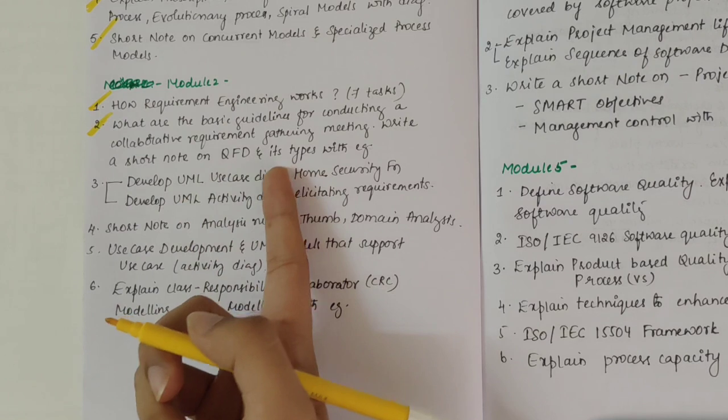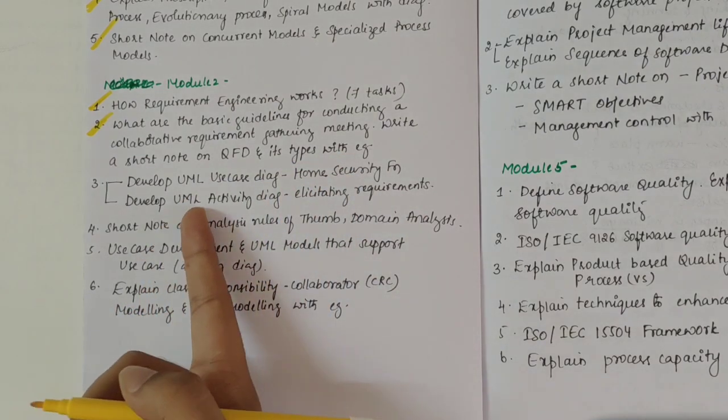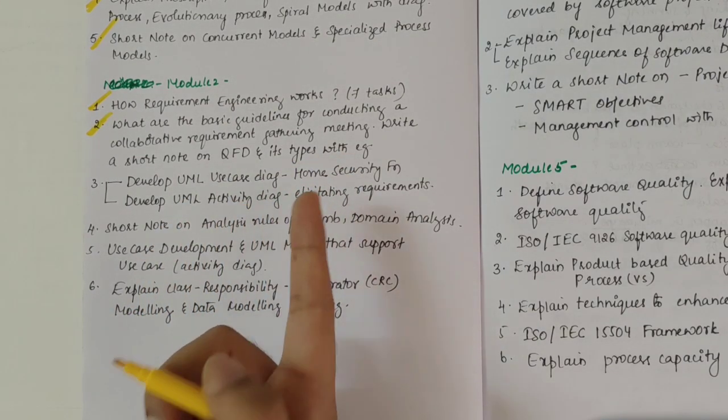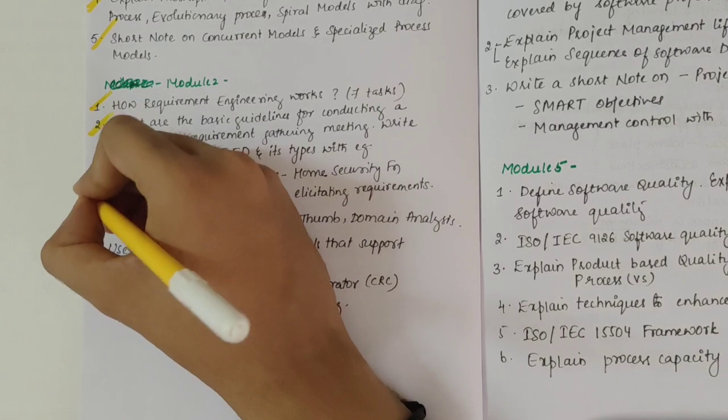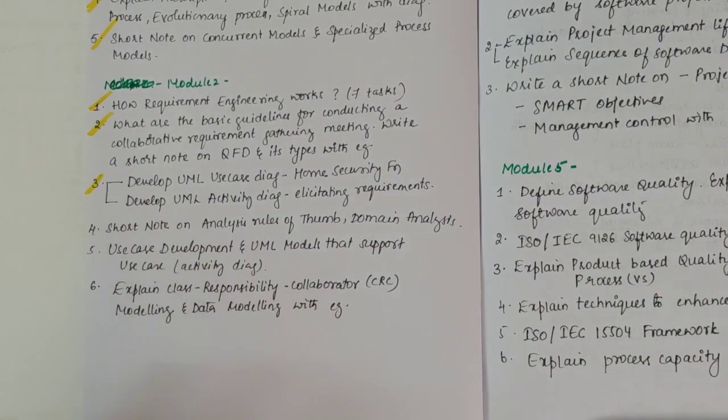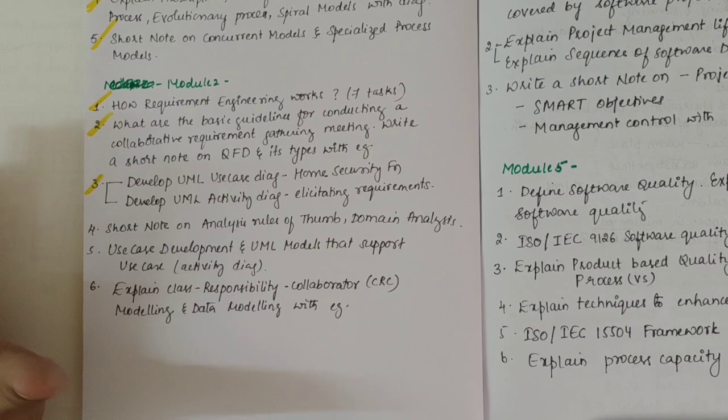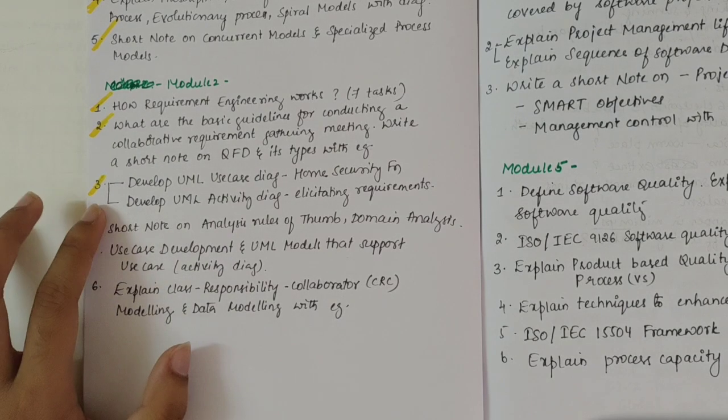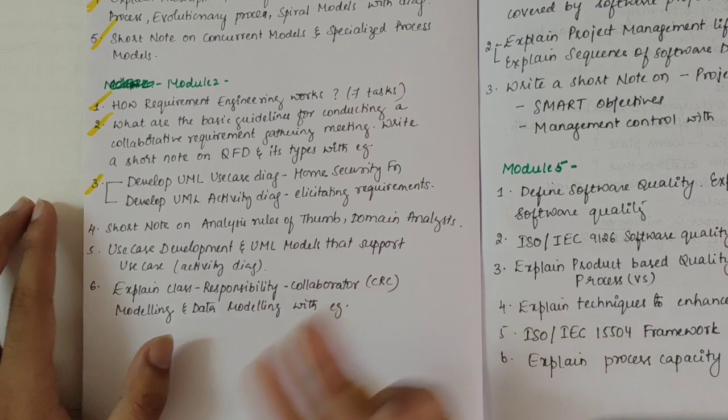Then we have UML case diagram for home security function and UML activity diagram - eliciting the requirements. Out of these two one would be asked. For sure this will be 10 marks question only because along with the diagram we have to write about each and every step also. This is time and page consuming both.